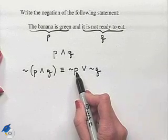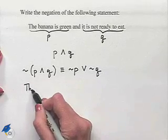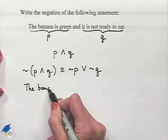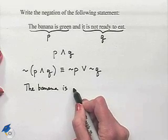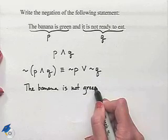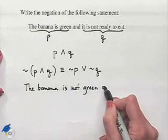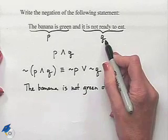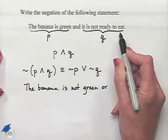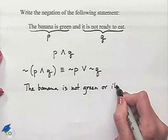The negation of P would be the statement 'the banana is not green,' or, and we want to negate Q, which we would then read 'it is ready to eat.'